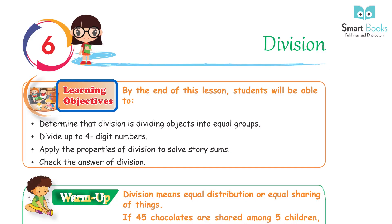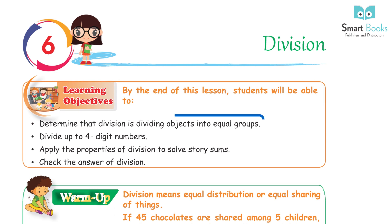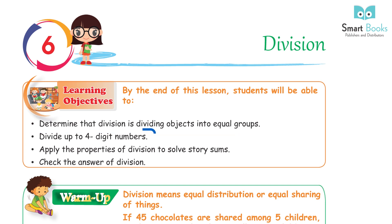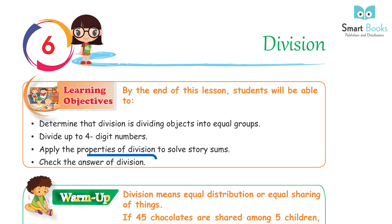Learning objectives: by the end of this lesson, students will be able to determine that division is dividing objects into equal groups, divide up to four-digit numbers, apply the properties of division to solve story sums, and check the answer of division.